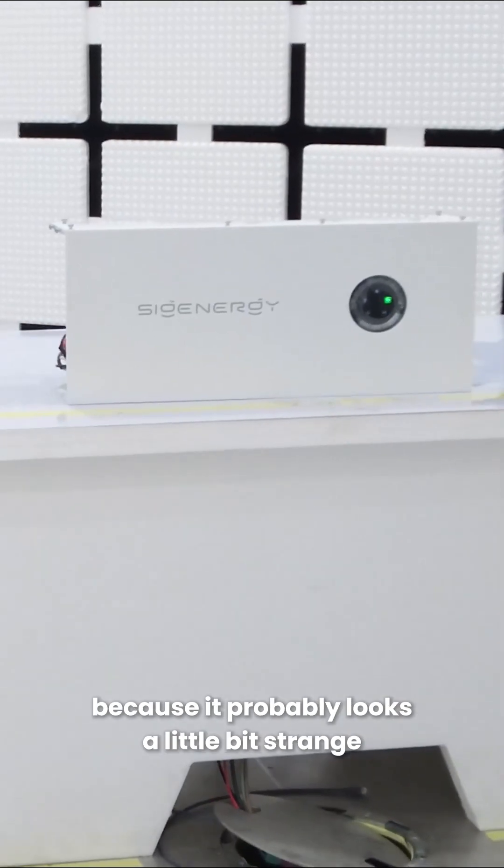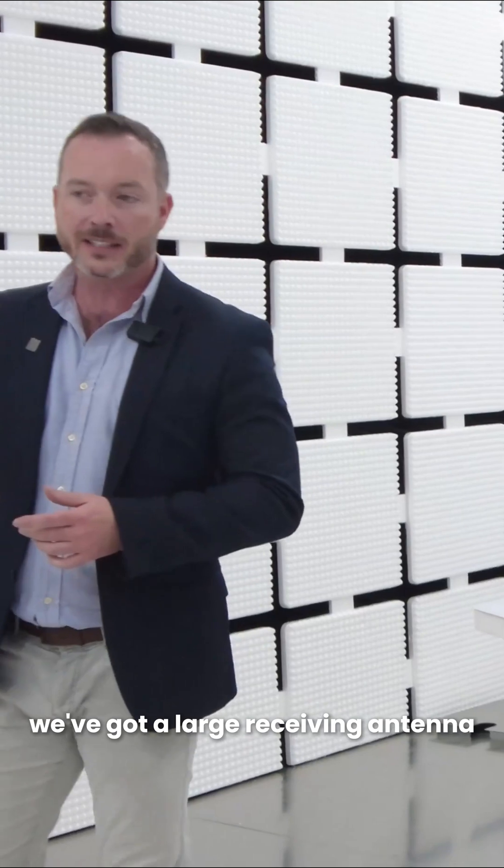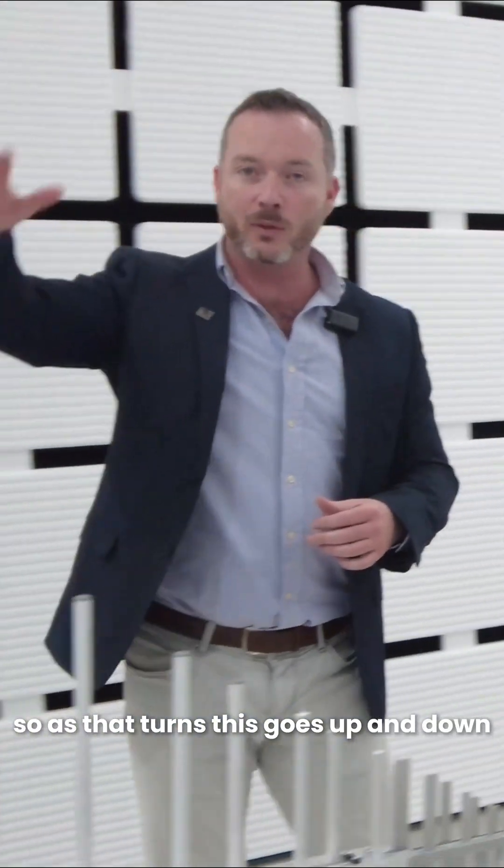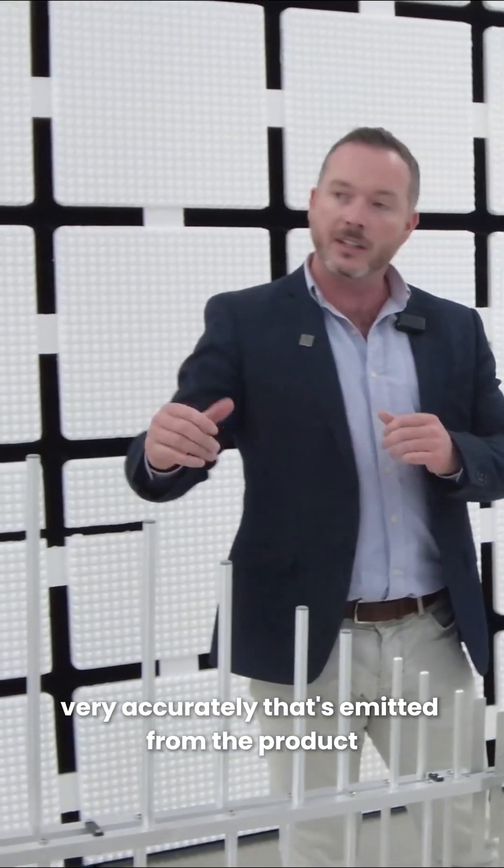Just to explain what's going on because it probably looks a little bit strange - we've got the inverter spinning around, we've got a large receiving antenna. As that turns, this goes up and down, and it's basically measuring the radiation emitted from the product.